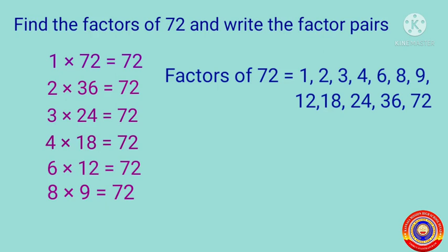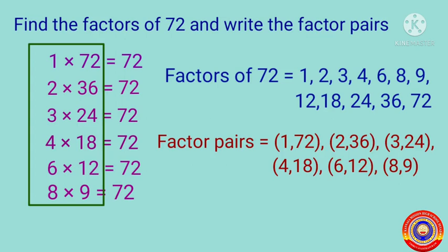We shall write the factor pairs of 72 as: (1, 72), (2, 36), (3, 24), (4, 18), (6, 12), and (8, 9).